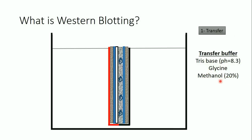From the previous SDS-PAGE video, you know that SDS molecules are bound to the proteins. What I want is for the proteins to bind to the surface of the membrane. If the protein is still bound to SDS, this will interfere with the protein binding to the membrane. So methanol is used to detach the SDS molecules and facilitate the binding of the proteins to the membrane.